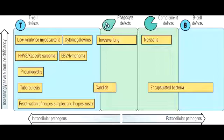Name the fungal infections that can occur due to granulocyte deficiency. The fungal infections that can occur due to granulocyte deficiency are Candida and Aspergillus infection.